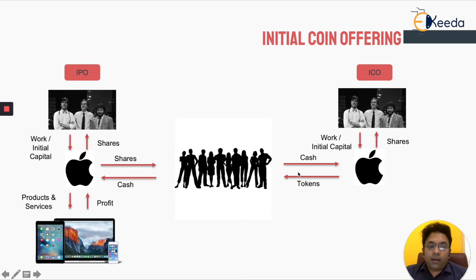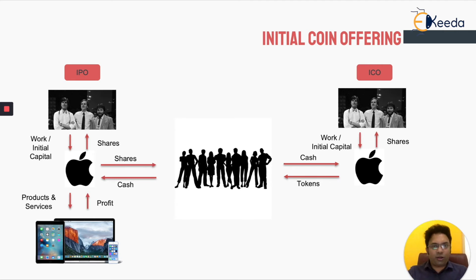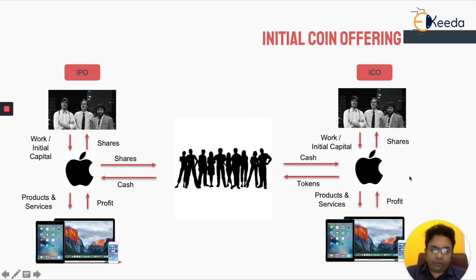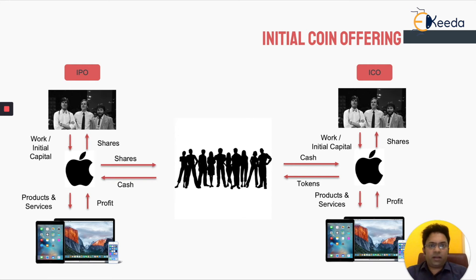So in this case, we are converting it into tokens because blockchain is by design global. You can just convert this Apple company into tokens on the blockchain — anyone will be able to invest, there is no regulation involved. Now these people, instead of getting shares, are getting tokens. Of course, with the cash they got — cash in terms of Ether or Fiat, cash is cash — they create the products and services and they get profit as well. But one thing to keep in mind is that these tokens don't give ownership. This is not a security token; it's a utility token.